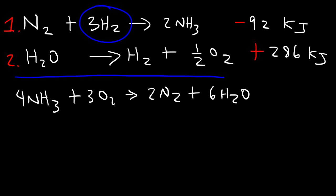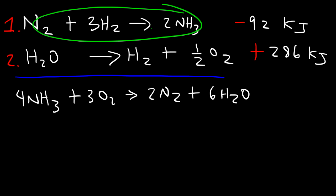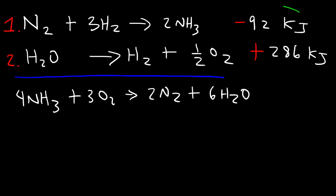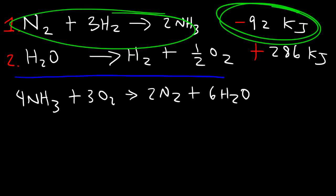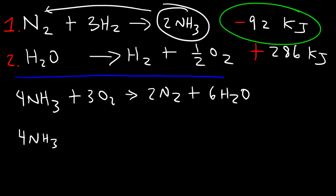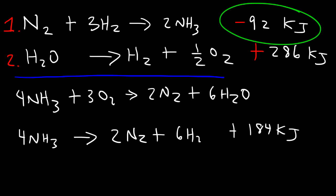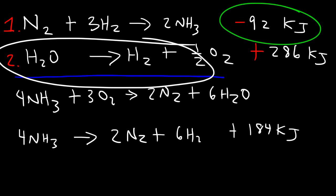Notice that nitrogen gas is on the left side of reaction 1, but we need it on the right side with a coefficient of 2. So we reverse reaction 1 and multiply it by 2. Reversing changes the sign; multiplying by 2 multiplies ΔH by 2. This gives: 4 NH₃ → 2 N₂ + 6 H₂, with ΔH = +184 kJ (that's 92 × 2).